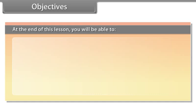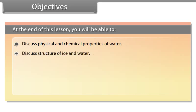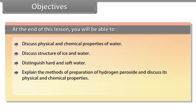At the end of this lesson, you will be able to discuss physical and chemical properties of water, discuss structure of ice and water, distinguish hard and soft water, explain the methods of preparation of hydrogen peroxide and discuss its physical and chemical properties, define heavy water, and discuss dihydrogen as a fuel.